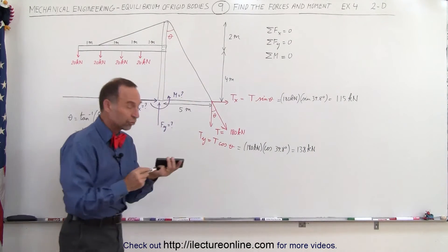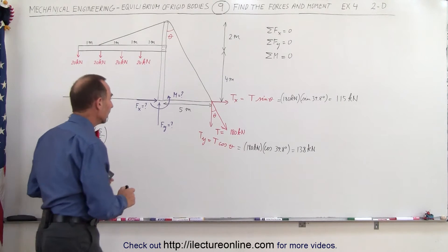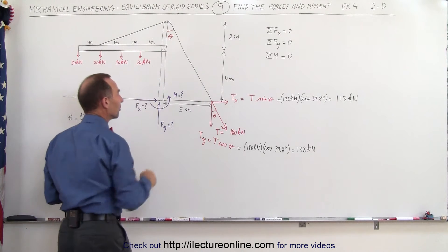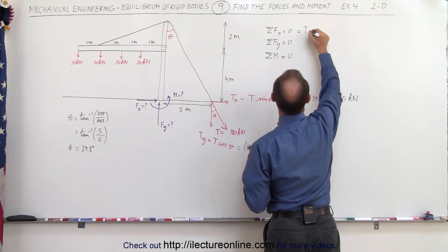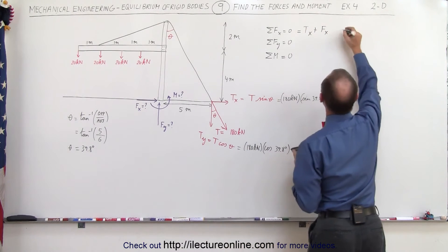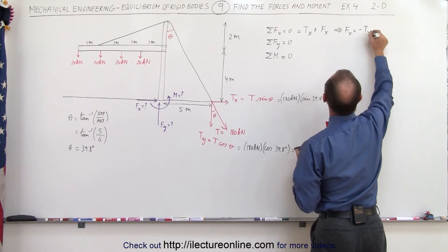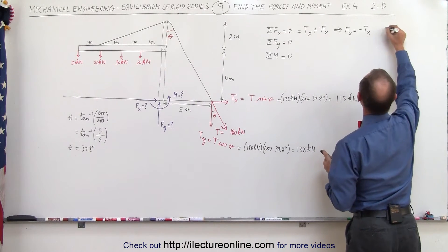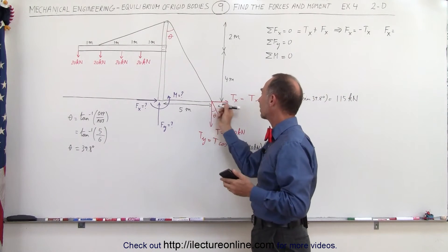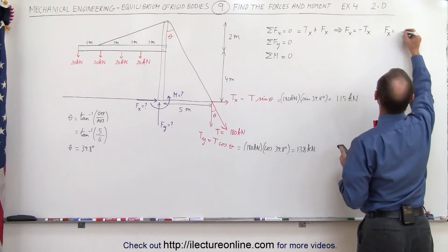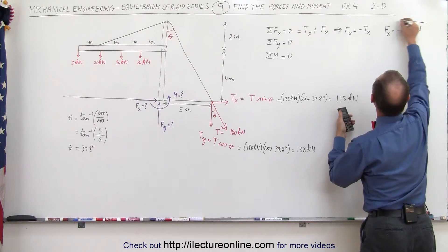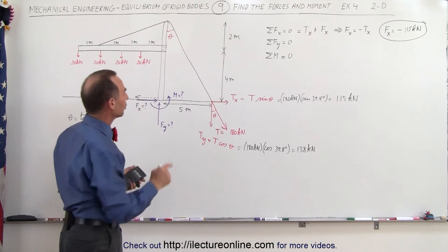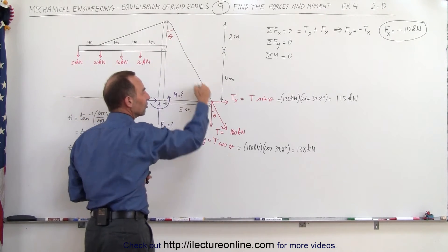Now we have all forces in the horizontal and vertical directions. For F_x, the only two forces in the x direction are T_x and F_x. Setting their sum to zero, F_x equals negative T_x. Since T_x acts to the right, F_x acts to the left, giving F_x equals minus 115 kilonewtons. This compensates for the horizontal component of the cable tension.